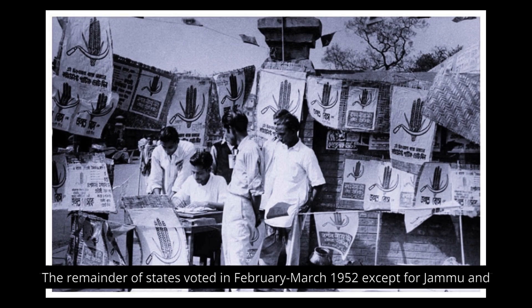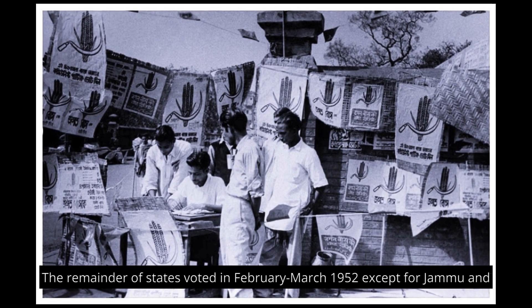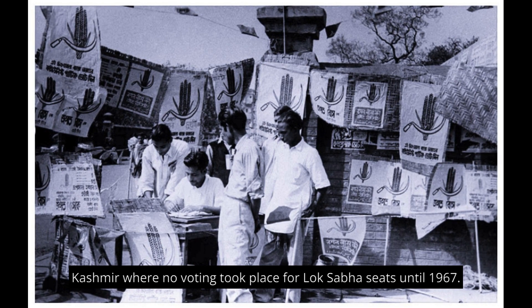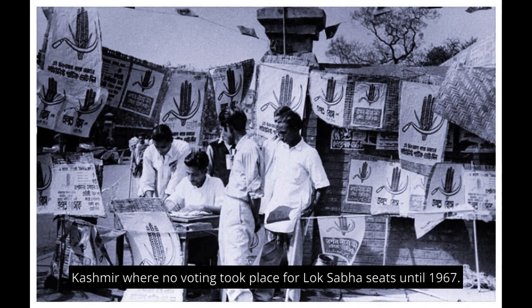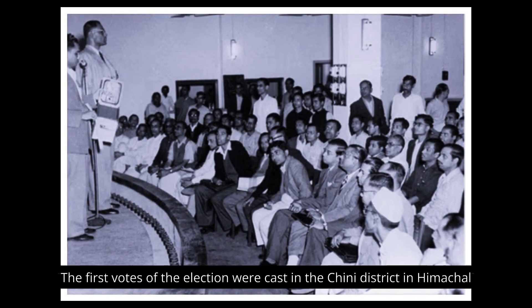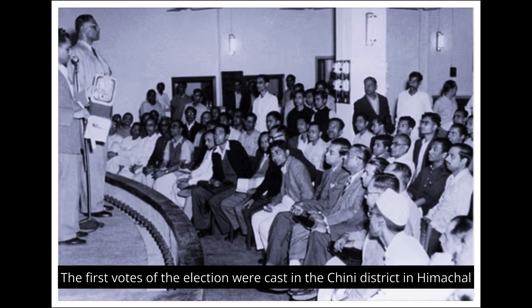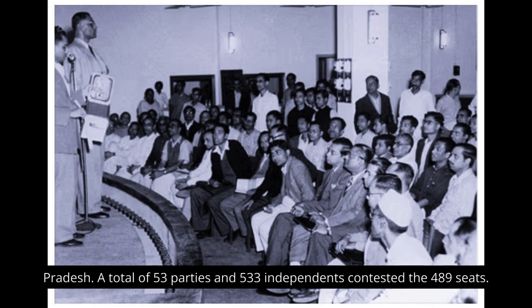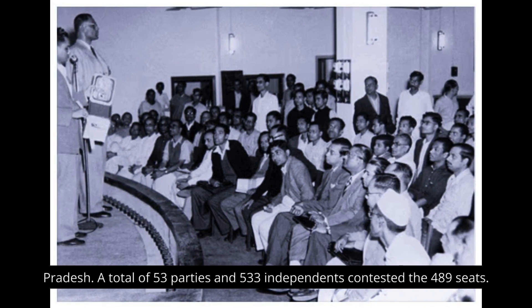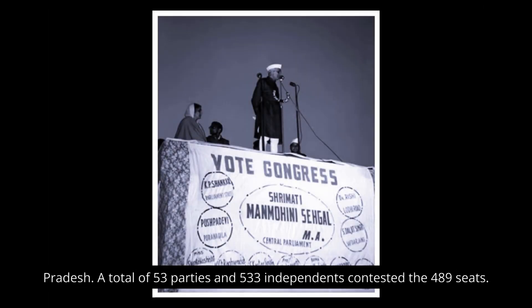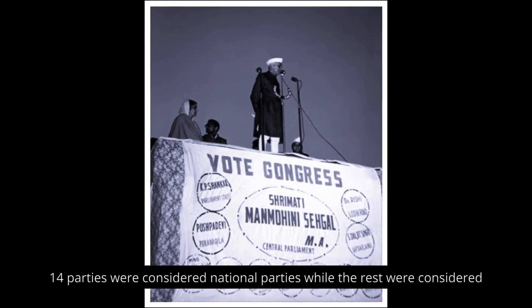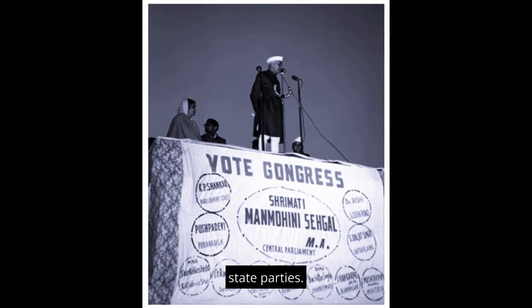The remainder of states voted in February–March 1952, except for Jammu and Kashmir, where no voting took place for Lok Sabha seats until 1967. The first votes of the election were cast in the Chini district in Himachal Pradesh. A total of 53 parties and 533 independents contested the 489 seats, with 14 parties considered national parties and the rest considered state parties.